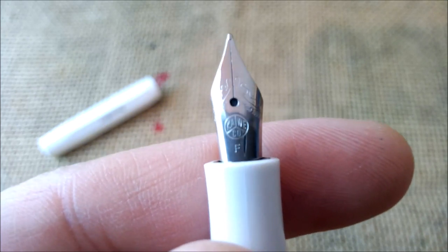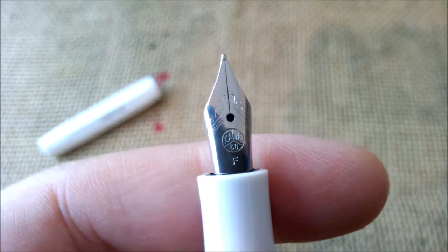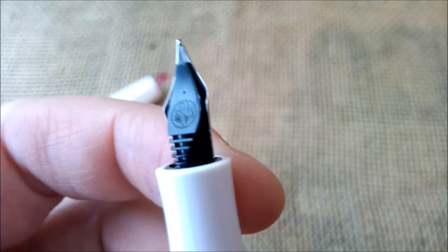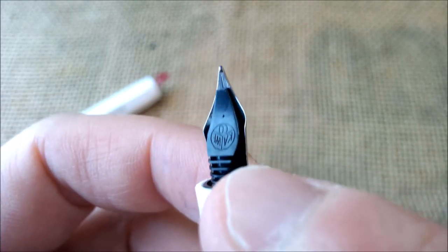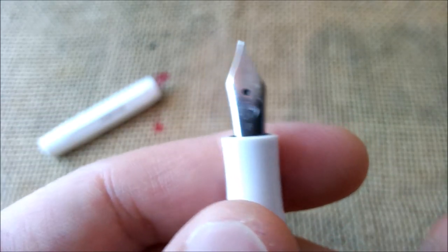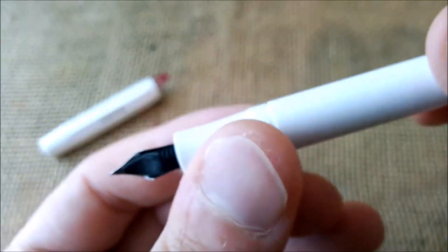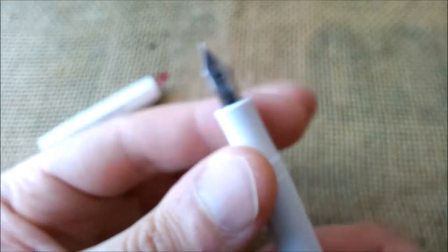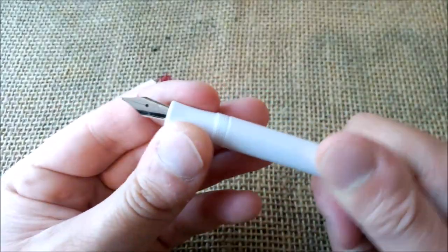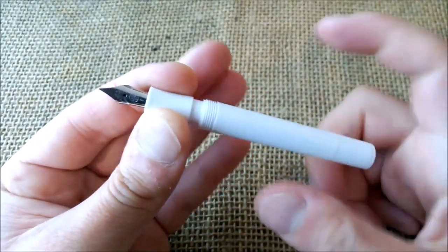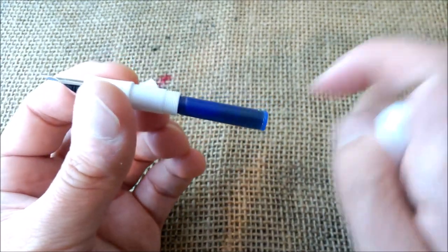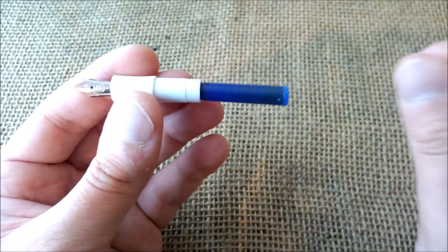It is an F nib as you can see, with the regular Kaweco feed that has the Kaweco logo in the opposite direction of the nib. Inside the pen it takes cartridges or the small Kaweco converters.